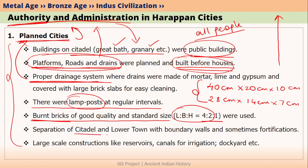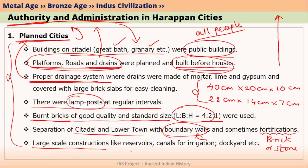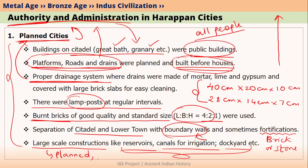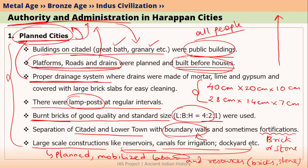Moreover, the citadel and the lower town were separated by boundary walls, and sometimes there were also fortifications made of brick or stone. This means ordinary individual people were not building these walls — the government of Harappan cities was building them. The last and most important evidence is that we have found large-scale constructions like reservoirs, canals for irrigation, and dockyards. These things cannot be built by private or individual entities. This means the government planned the construction and mobilized labor and resources for it, indicating administration in Harappan cities.